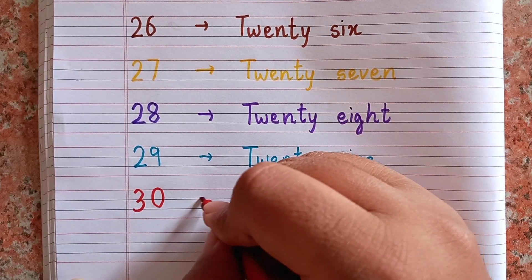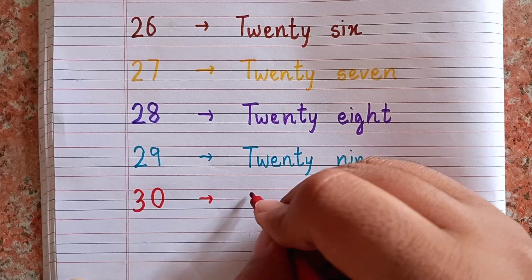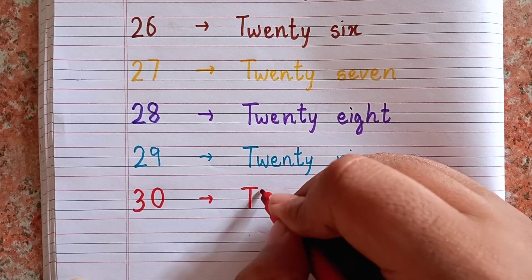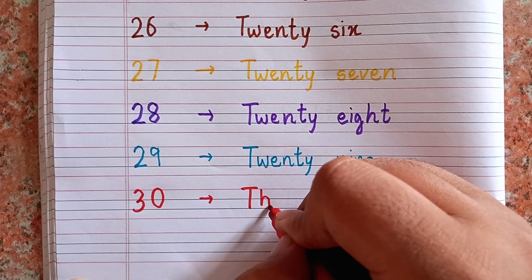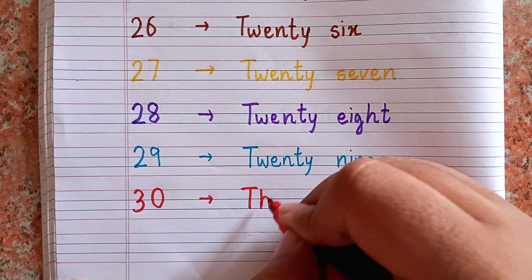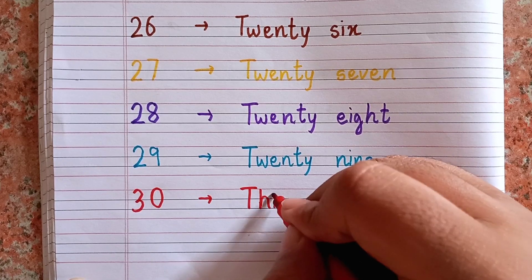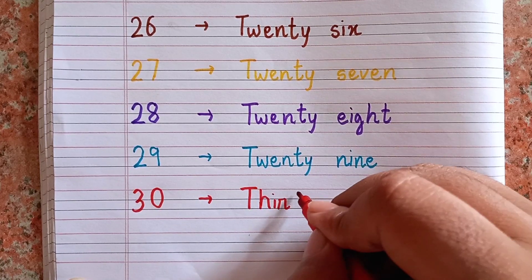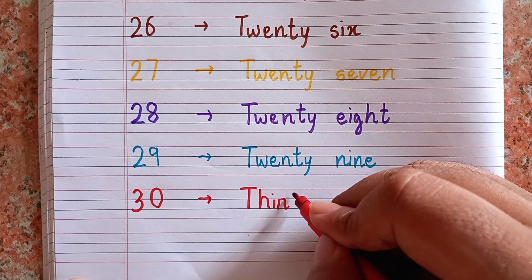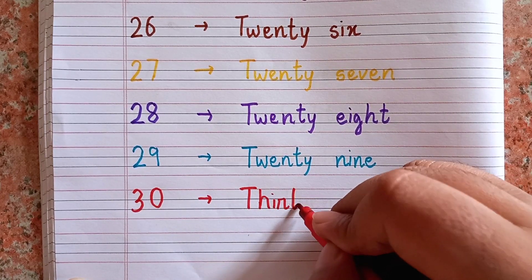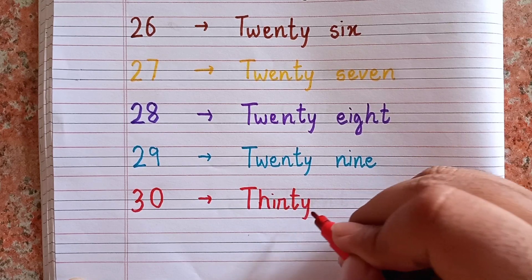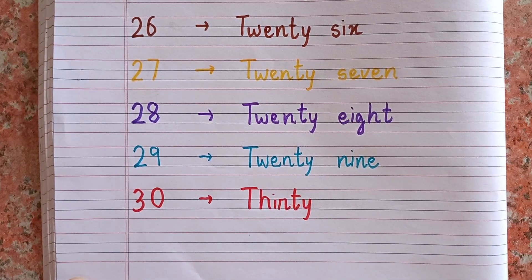Thirty — 3-0. The spelling of thirty is T-H-I-R-T-Y. 30.